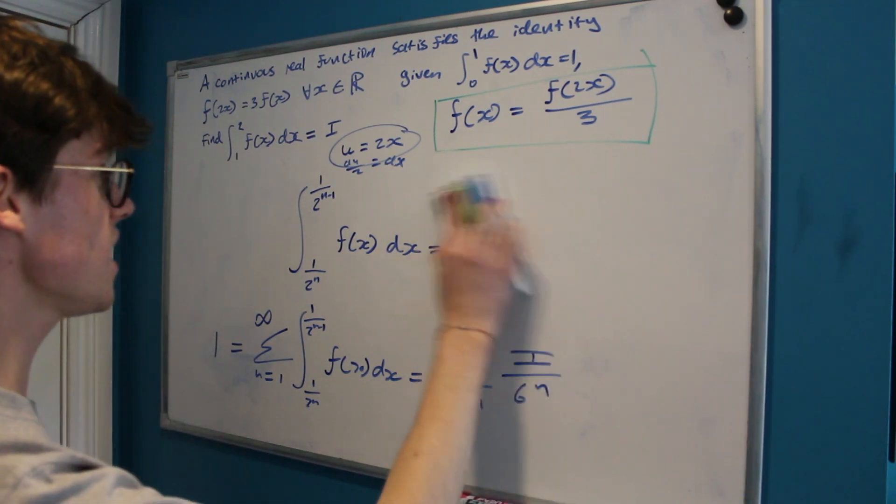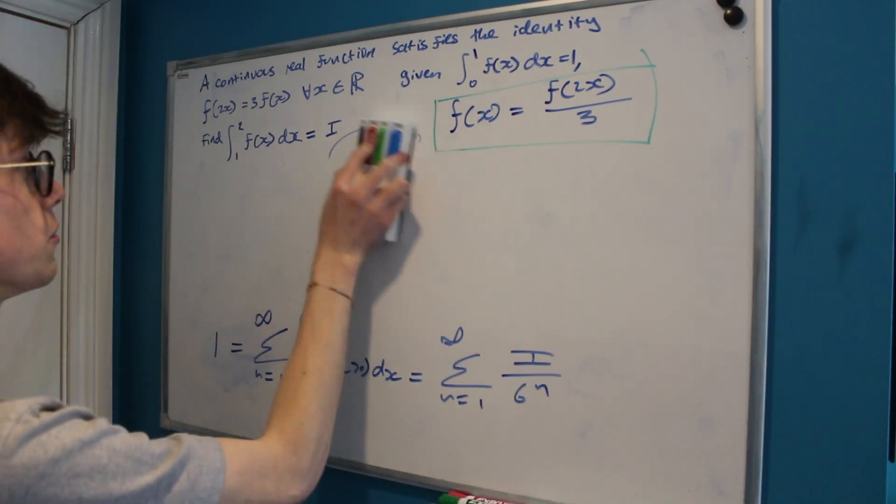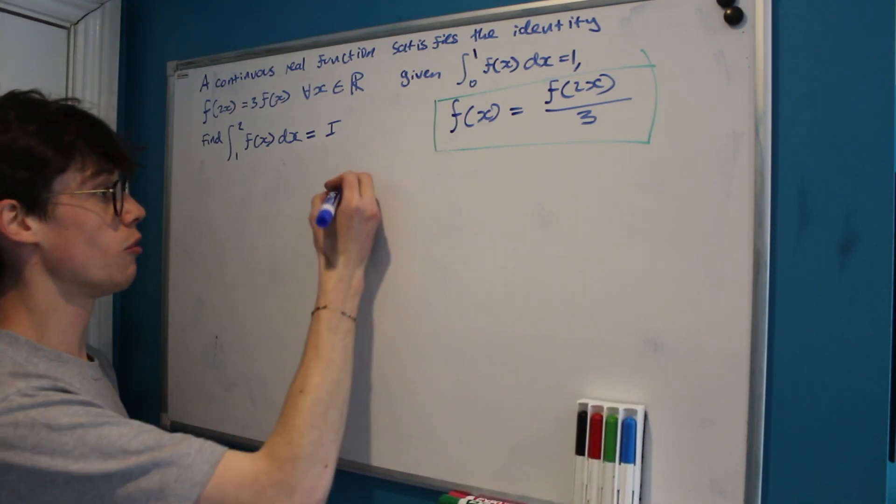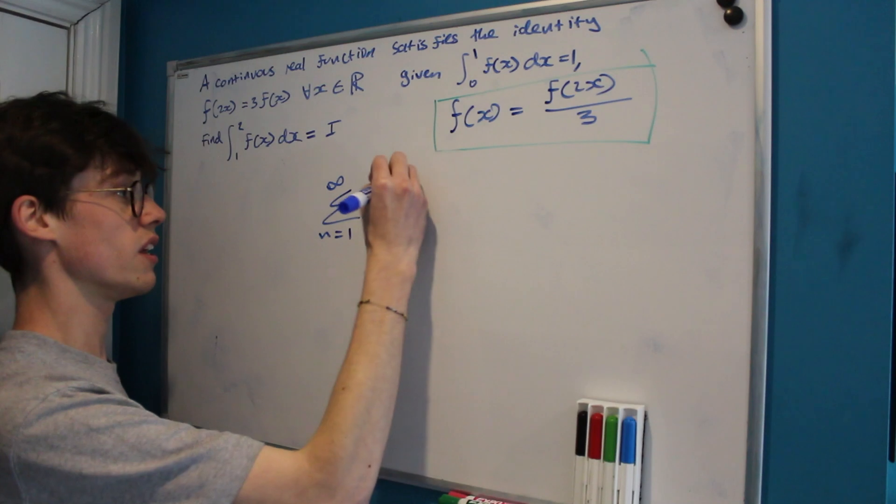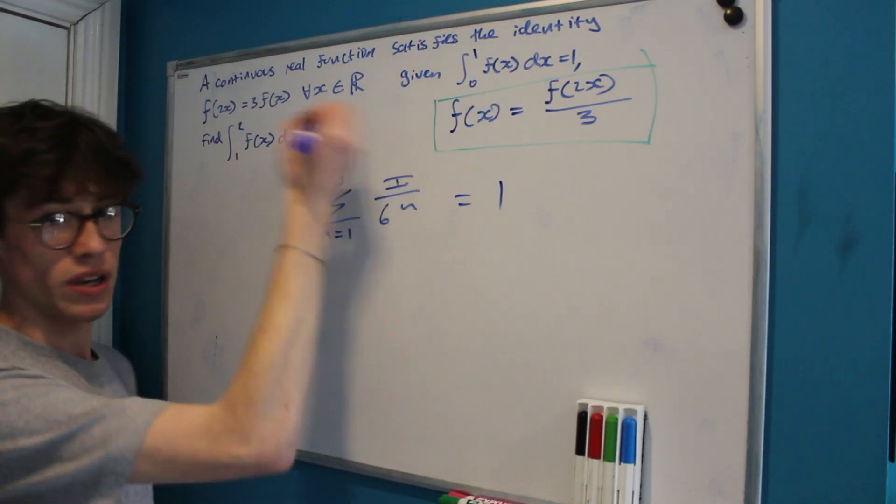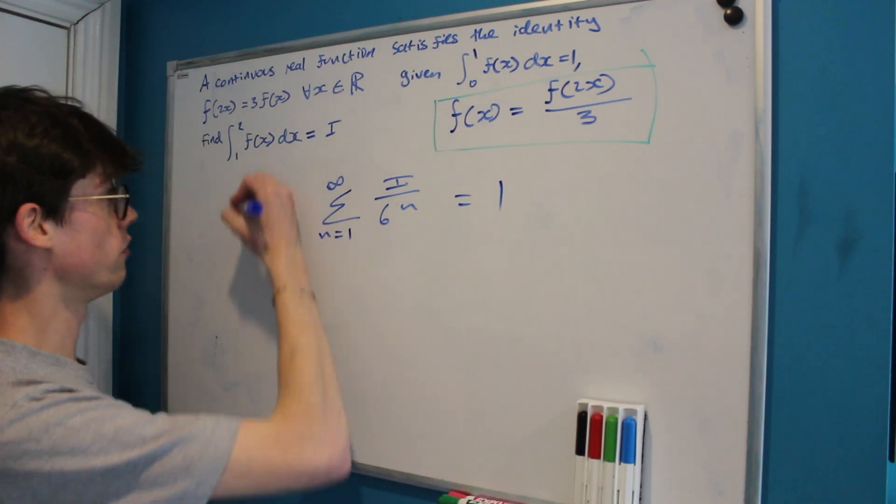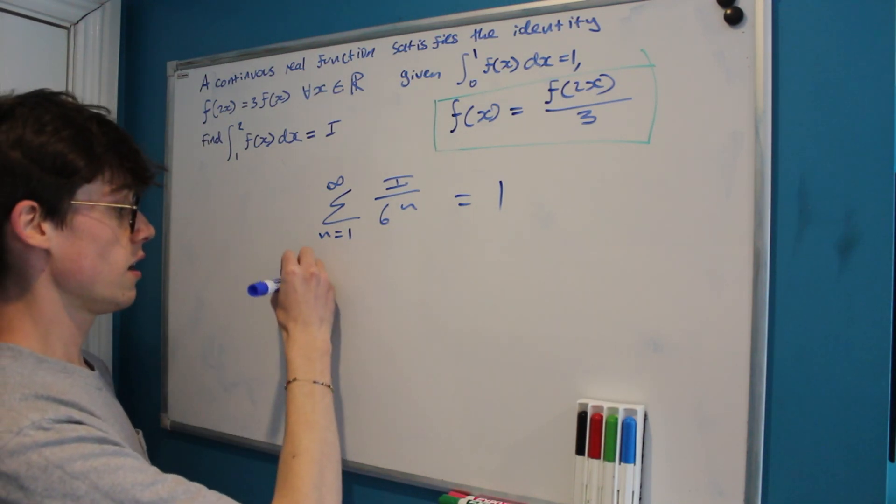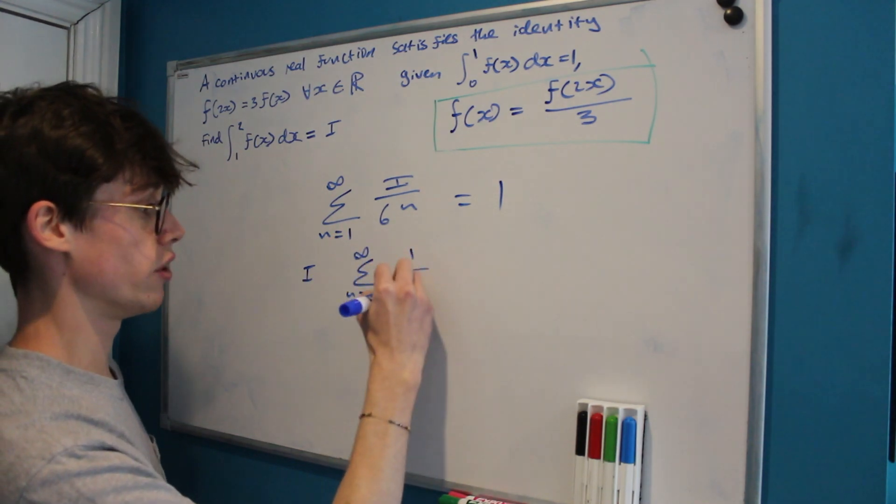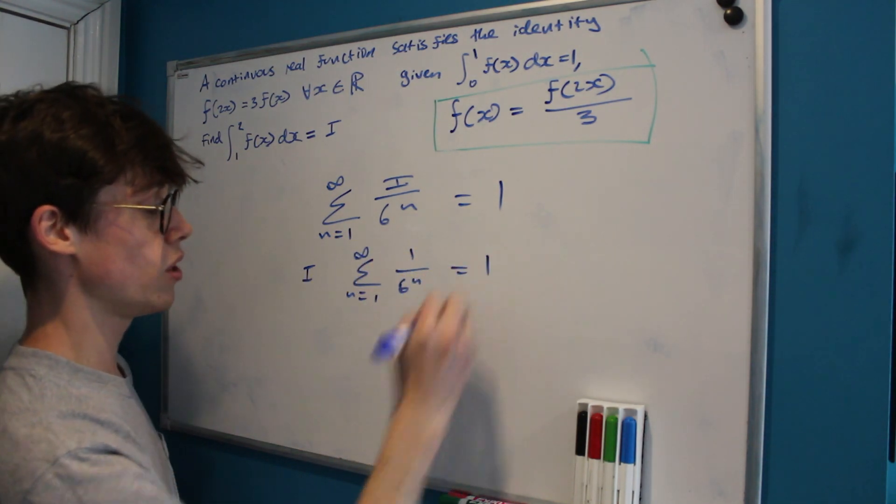So we can take out this kind of ugly bit in the middle that's quite difficult to deal with, and now we've just got a really simple problem. The sum from 1 to infinity of i over 6 to the n equals 1. Well, we can take out i because it's independent of our variable of summation, which is n. So i times the sum from 1 to infinity of 1 over 6 to the n equals 1.